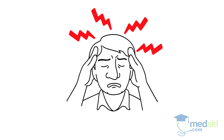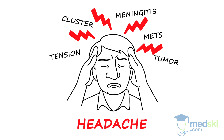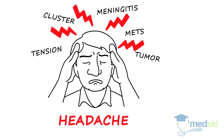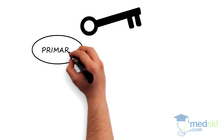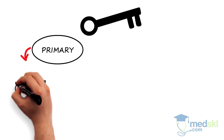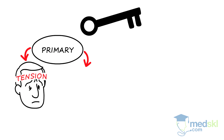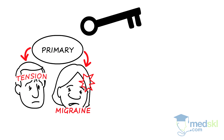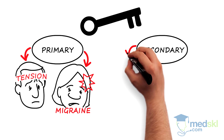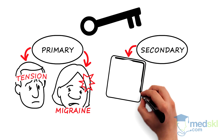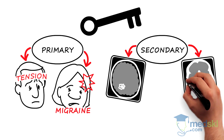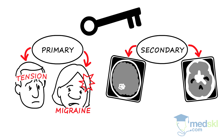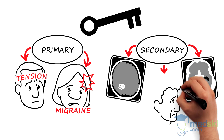There are literally hundreds of different headache types. The key thing is to differentiate a primary headache, like tension or migraine, from secondary causes, which include life-threatening causes like neoplasms, intracranial bleeds, or giant cell arteritis.